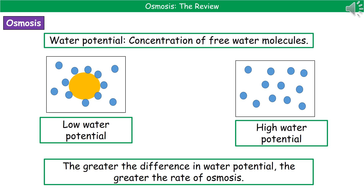In our definition we use the phrase 'water potential', which refers to the concentration of free water molecules. In the pictures provided, on the left we have low water potential where a solute is present and only a very small number of water molecules are free. On the right we have high water potential where all the water molecules are free. As a standard pattern, if we have a greater difference in water potential between two areas, then the rate of osmosis is going to be greater or faster.